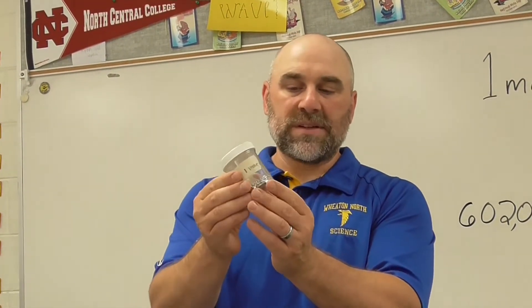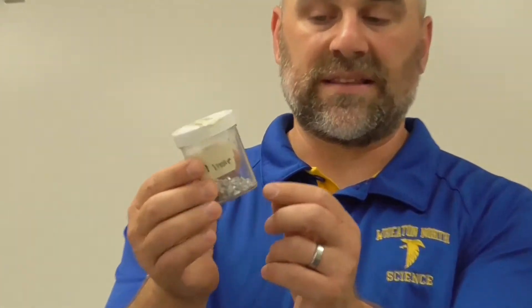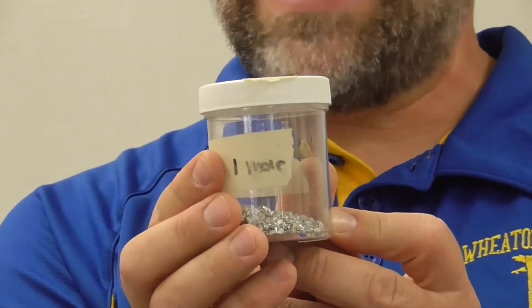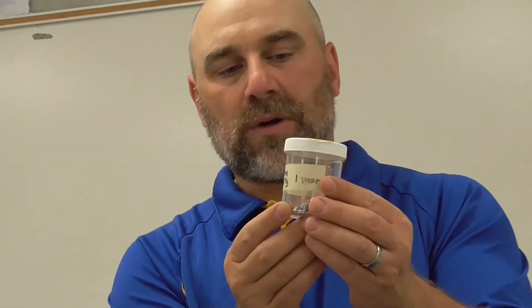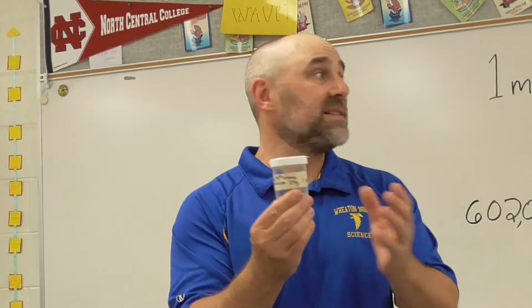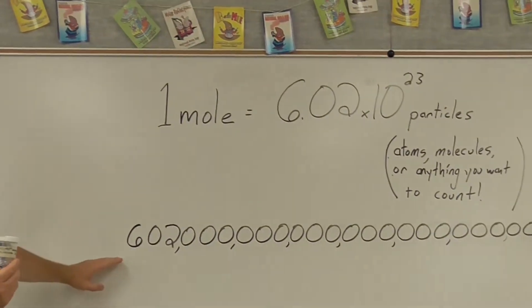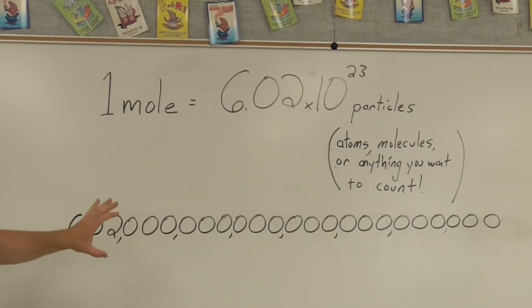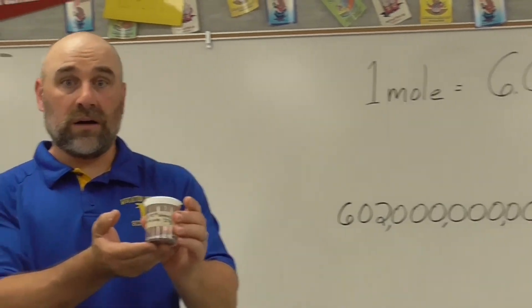This is a mole of aluminum. A common misconception is, as students look at the little granules in here, that they think that the number of granules in here is a mole. That's not nearly correct. This would have several thousand granules, but a mole, again, is 6.02 times 10 to the 23rd. It is a tremendously large number. So this would be one mole of aluminum.